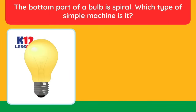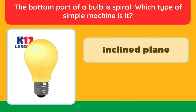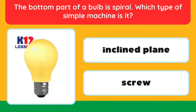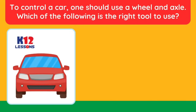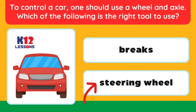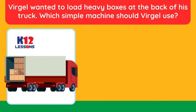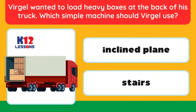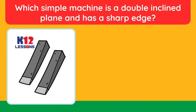The bottom part of a light bulb is spiral — which type of simple machine is it? Answer: screw. To control a car, one should use a wheel and axle — which tool is correct? Answer: steering wheel. Virgil wanted to load heavy boxes at the back of his truck — which simple machine should he use? Answer: inclined plane or stairs. Which simple machine is a double inclined plane with a sharp edge? Answer: wedge.